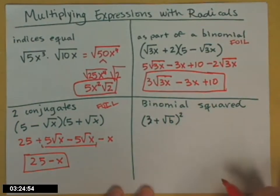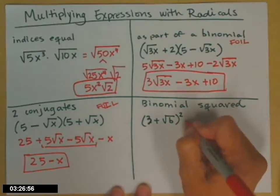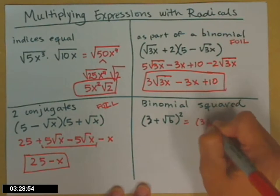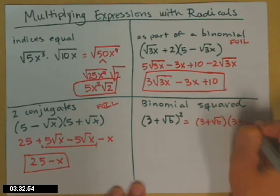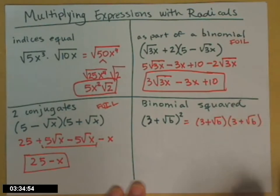Last example. When you have a binomial squared. A couple ways you can go about it. There is a pattern. It's taught in beginning algebra. So if you know that pattern, if you remember it, you can follow it. If you don't remember it, you need to write out the two binomials and do the FOIL.